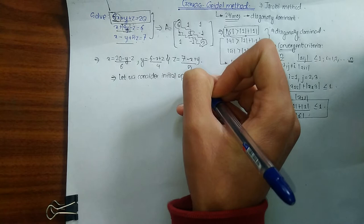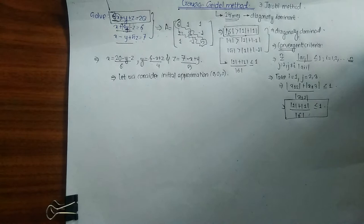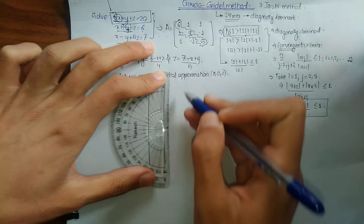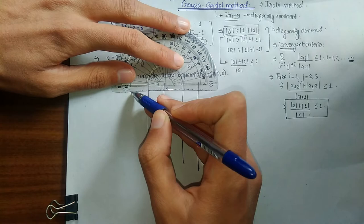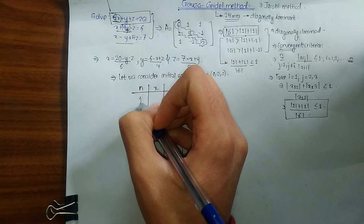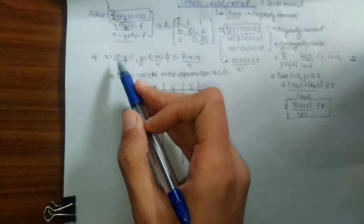We consider the initial approximation x₀ = 0, y₀ = 0, z₀ = 0. Next, we create an iteration table with columns n, x, y, and z. For the first iteration, we place the initial values and begin calculating x₁.